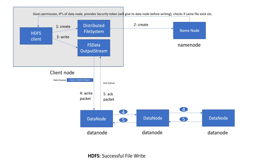Once the acknowledgement comes back to the FS data output stream, it will communicate a close operation. Since the output stream doesn't have any more write operations to do, it will close. Finally, it will inform the name node, which will have all the required information, and the operation will be complete. This is the happy scenario for a write operation.